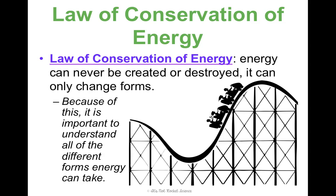We already learned about kinetic energy in concept one, which is energy in motion, and potential energy — elastic, which is in springs; gravitational, which is things above the surface; and chemical, which is in food and energy sources like gasoline and stuff like that.